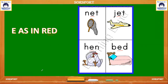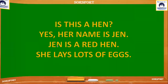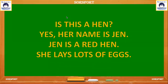And now come a few lines related to E. You can start marking the three-letter words which have E in the middle, like hen. Is this a hen? Yes. Her name is Jen. Jen is a red hen. She lays lots of eggs. You can mark: hen, her — H, E, R; Jen — J, E, N; red — R, E, D; hen — H, E, N. These are the words which have E in the middle.